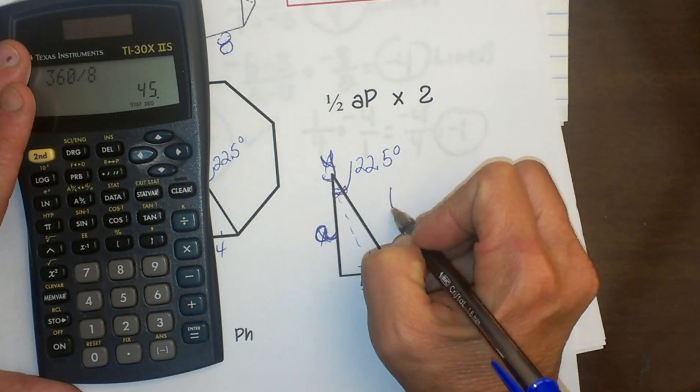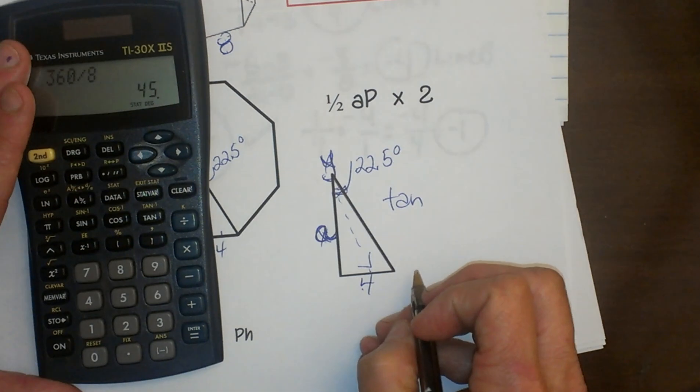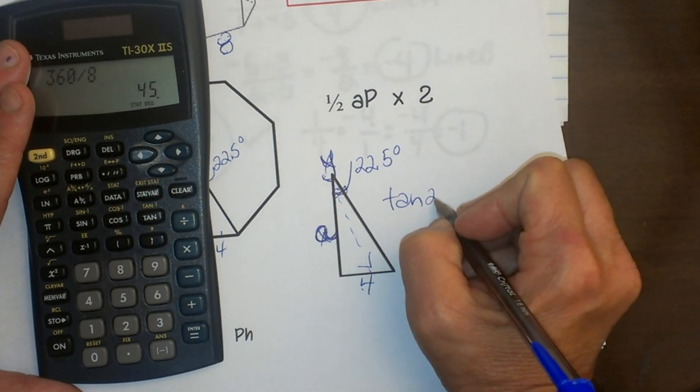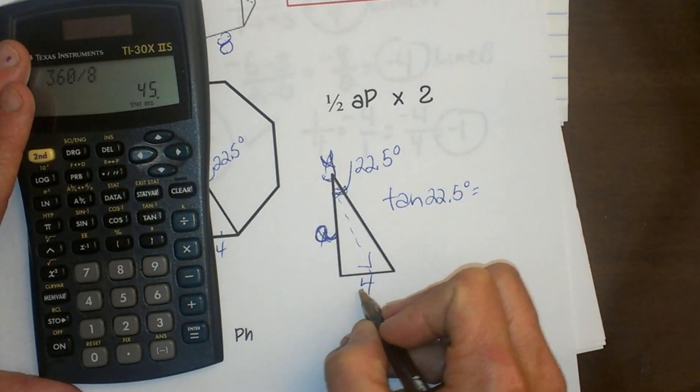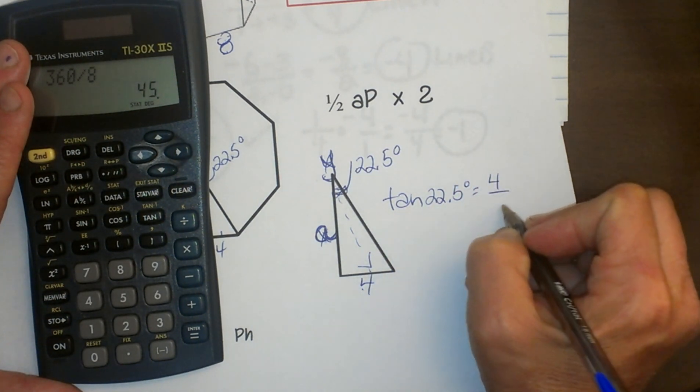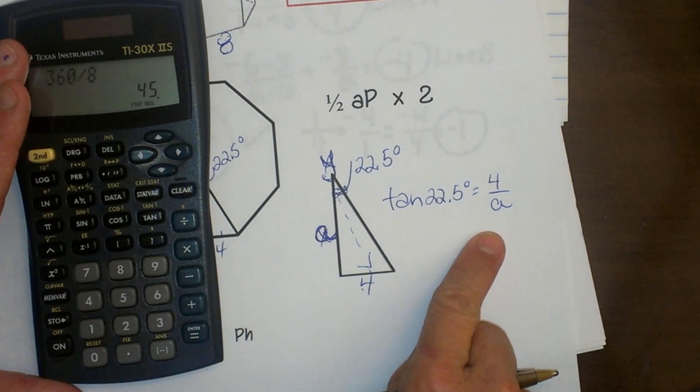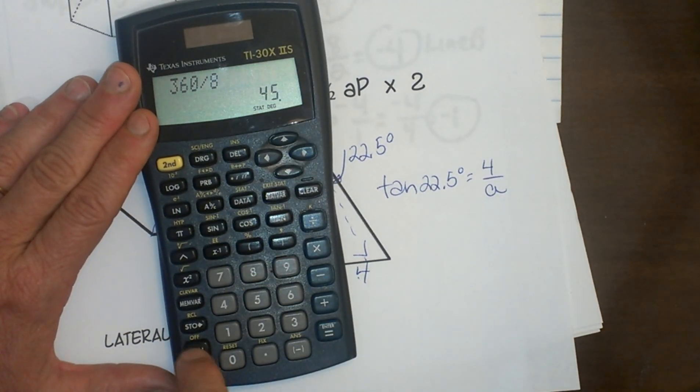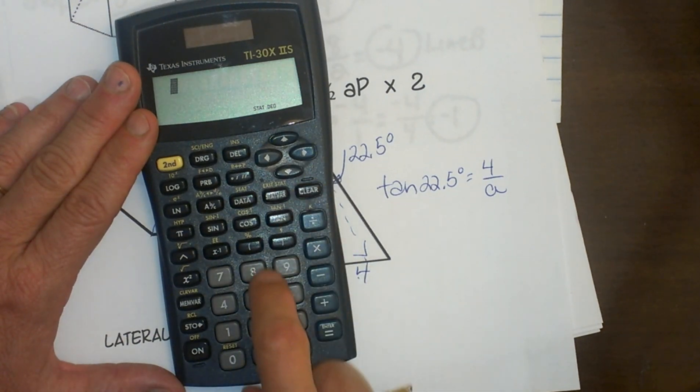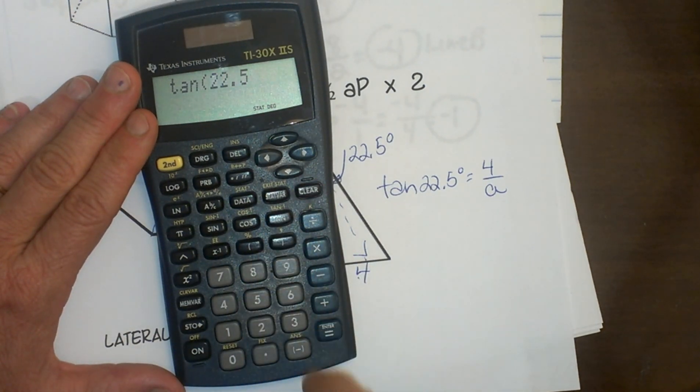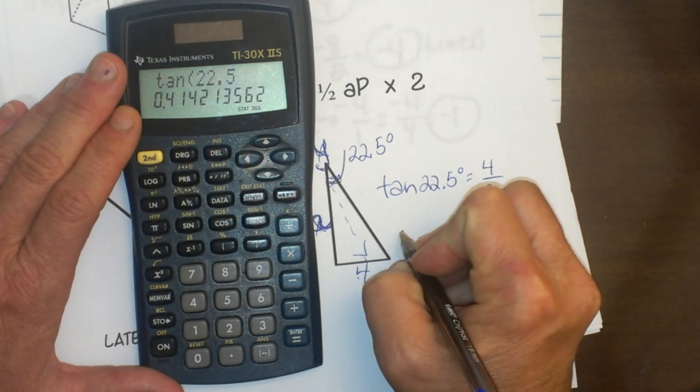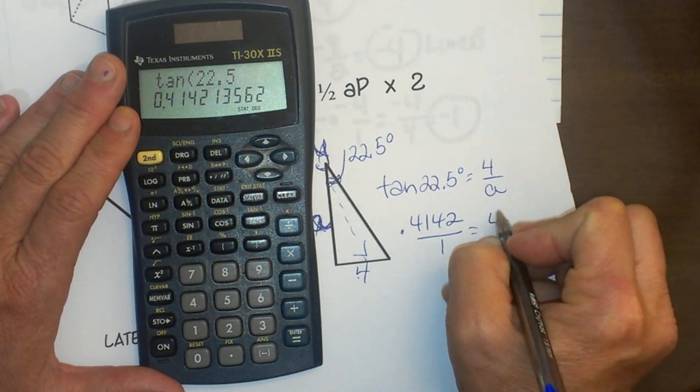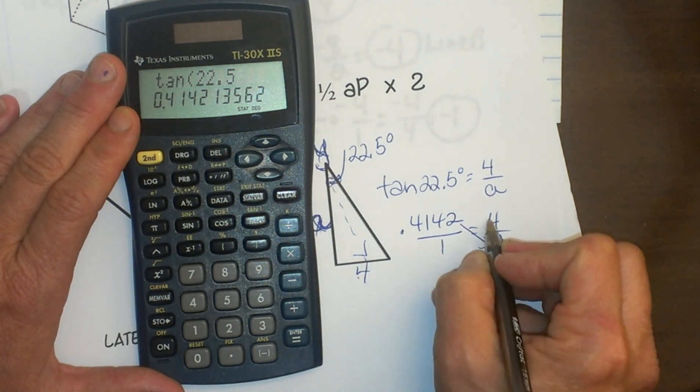For my angle, I'm going to use tangent because remember tangent is opposite over adjacent. So the tangent of 22.5 degrees is equal to 4 over my adjacent or my apothem. Let's figure this out by taking the tangent of 22.5, and that gives me 0.4142 all over 1 is equal to 4 over a, and then I do a cross product here.